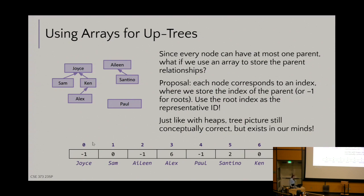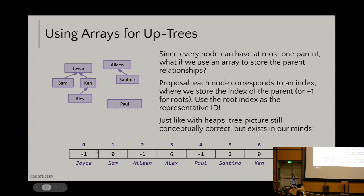If I look up Sam, Sam stores the value 0, meaning Sam's parent is Joyce (index 0). If I look up Alex — some map tells me Alex is at index 3 — I see Alex's parent is at index 6, so I jump to index 6, and there I see a 0, meaning that node's parent is at index 0, and so on. The traversal through the up tree, instead of following pointers, is just hopping around array indices. Arrays' contiguous memory make this super speedy — way faster than following pointer arrows.